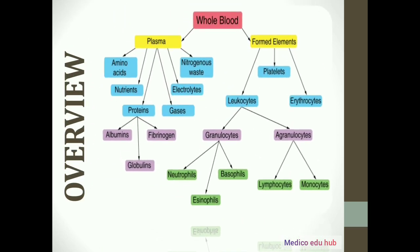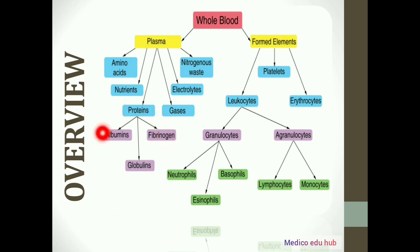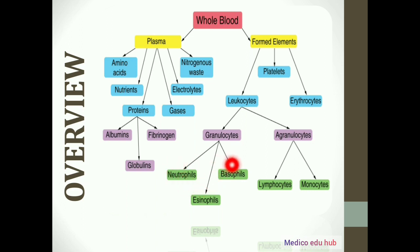The overview of this video: blood in our body is divided into two parts — plasma and formed elements. Plasma is 55% and formed elements are 45% of blood. Plasma is 90% water and 10% other constituents including proteins. Proteins are of three types: albumin, globulin, and fibrinogen — also called plasma proteins. Formed elements include erythrocytes (RBC), thrombocytes (platelets), and leukocytes (WBC). WBCs are divided into granulocytes and agranulocytes. Granulocytes include neutrophils, eosinophils, and basophils. Agranulocytes include lymphocytes and monocytes.